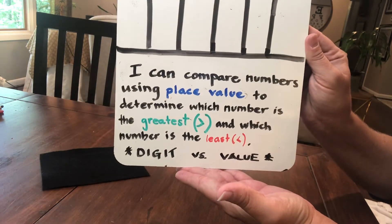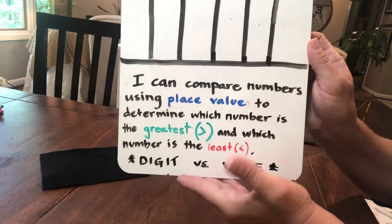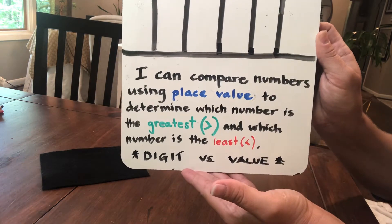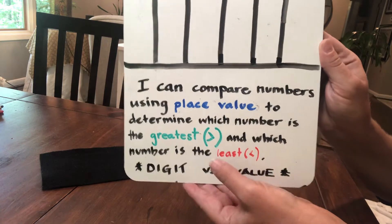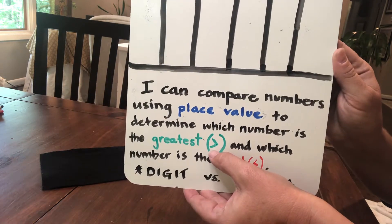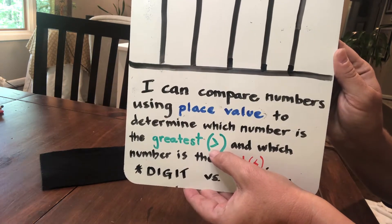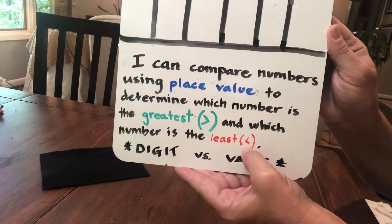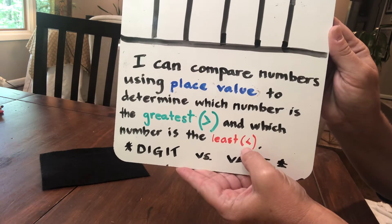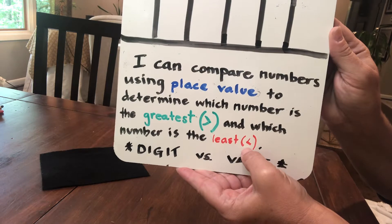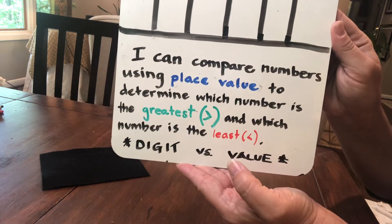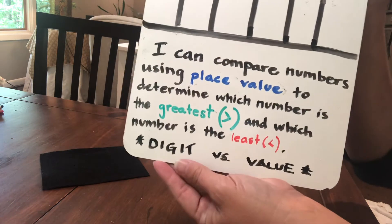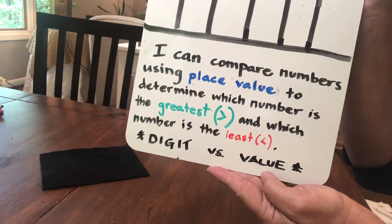I can compare numbers using place value, which we're familiar with, to determine which number is the greatest — we can use that little alligator mouth, which we'll talk about in a moment — and which number is the least, and we symbolize it using that little alligator mouth. The secret to your success, though, is knowing the difference between digit and value.